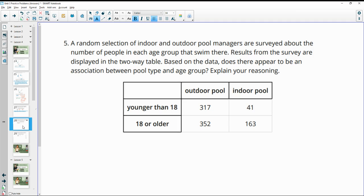Number five, a random selection of indoor and outdoor pool managers are surveyed about the number of people in each age group that swim there. Results from the survey are displayed in a two-way table. Based on the data, does there appear to be an association between pool type and age group? Explain your reasoning. And yes. So it looks like outdoor pools are about the same, so you almost have like a 50-50 split here. And you could figure out the actual percent by doing 317 plus 352 to get 669 total people here. And then divide each number by 669. So in an outdoor pool, about 47% of the people are under 18, and then that would mean 53% of the people are above 18.